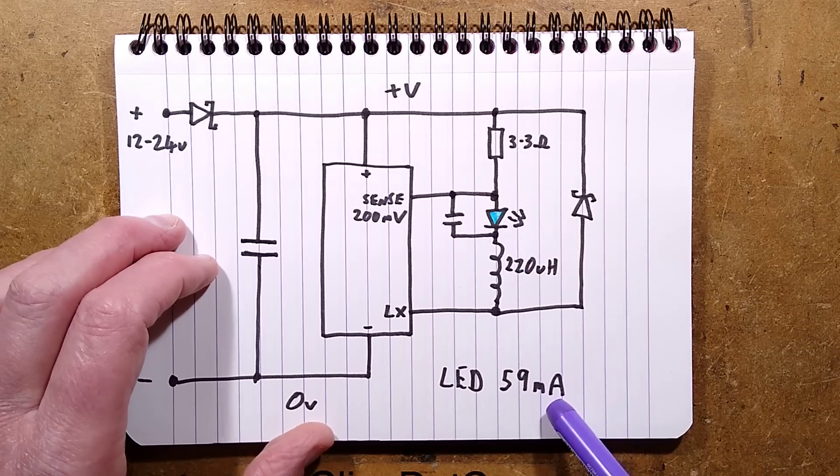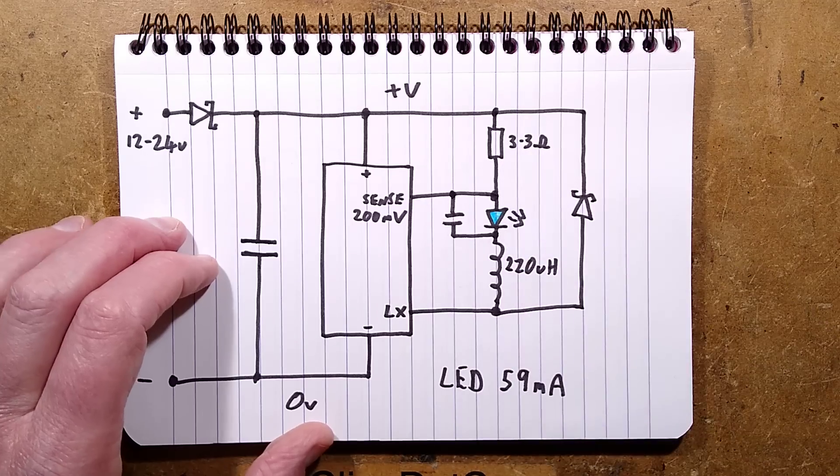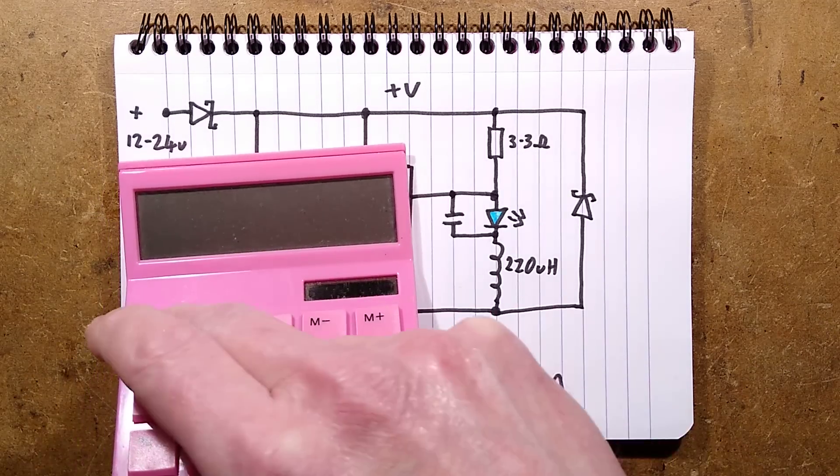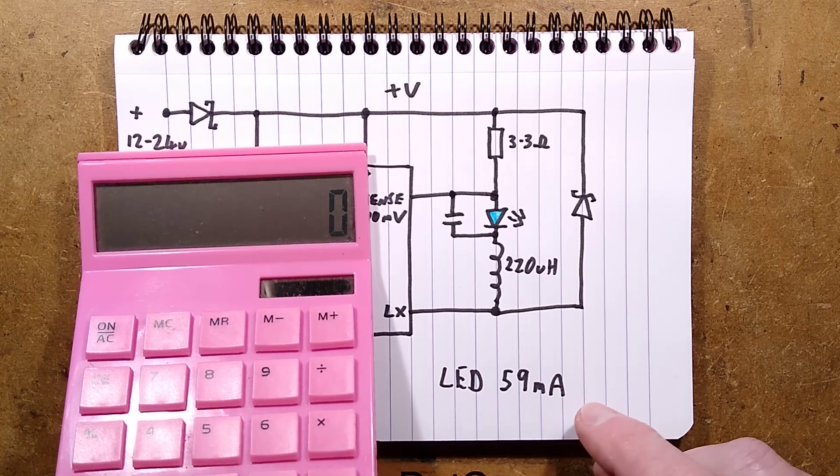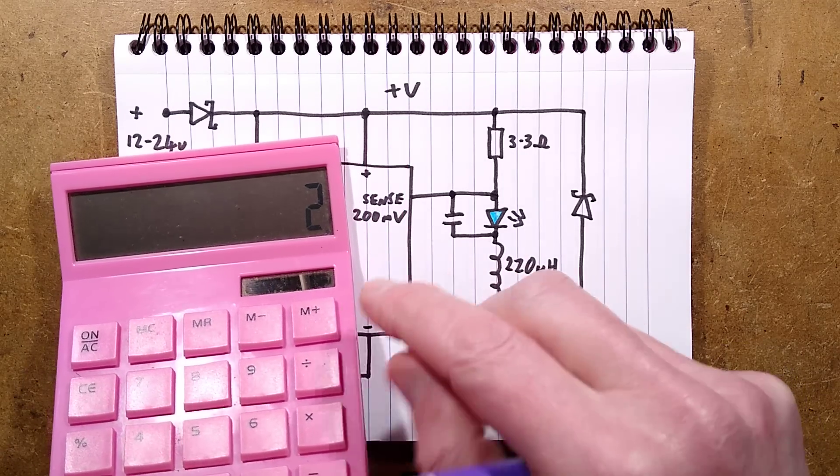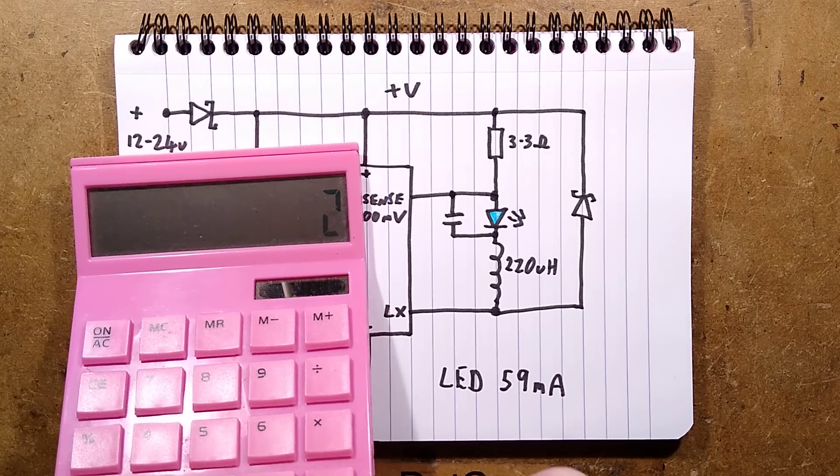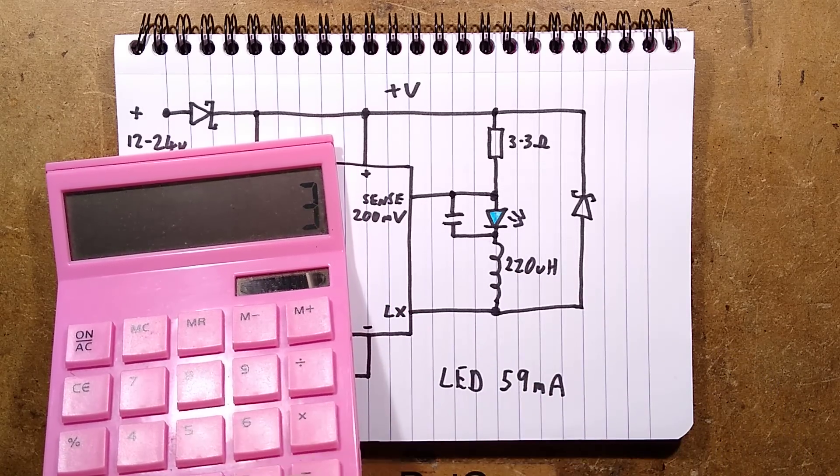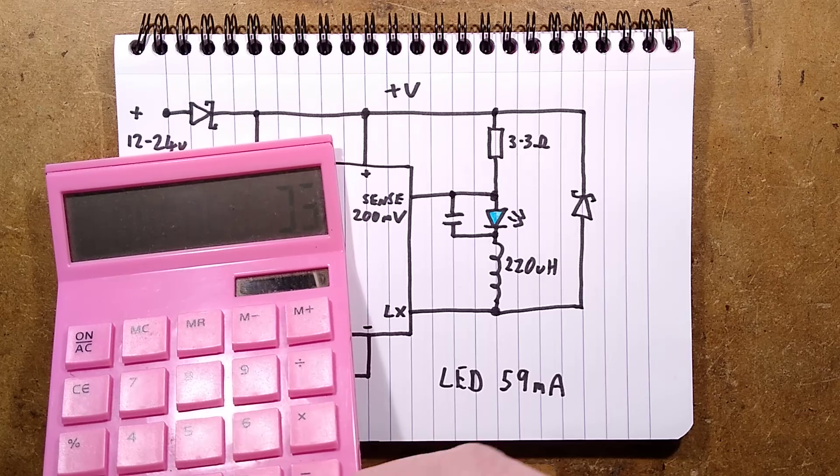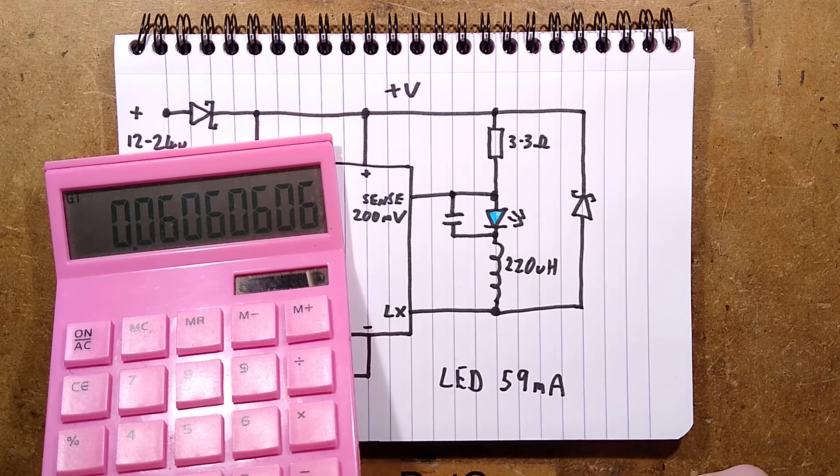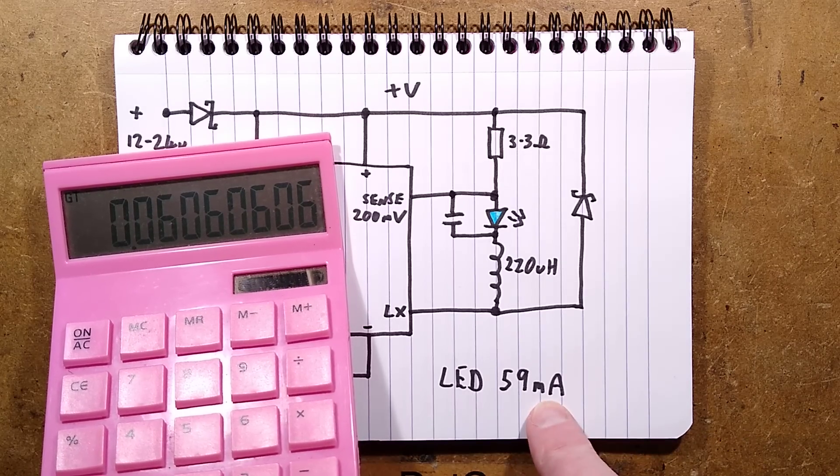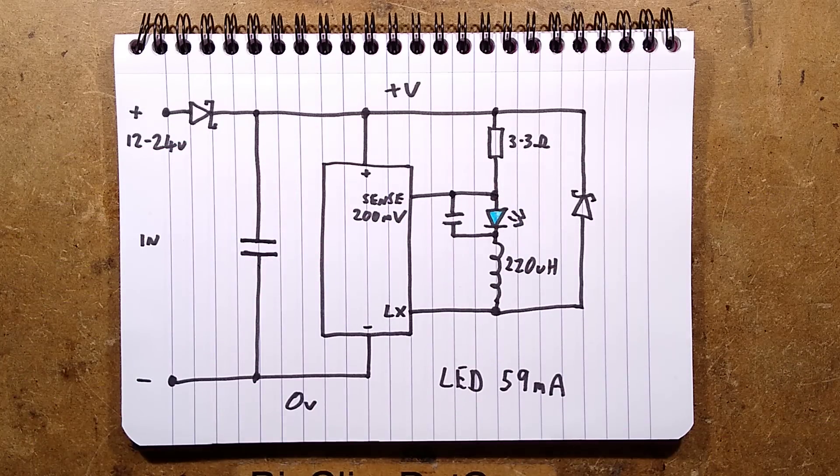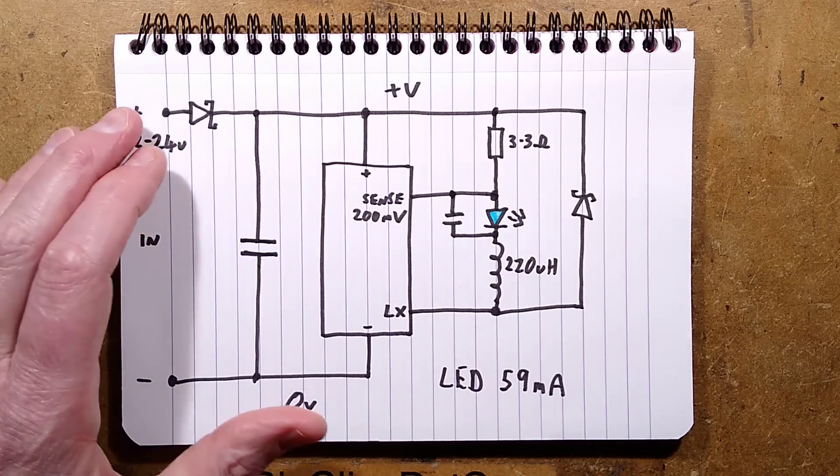I measured 59 milliamps. I wonder what current would actually be. Where's the calculator? I equals V over R. That's 0.2, which is the 200 millivolts, divided by 3.3 equals 60 milliamps. Very close to what I got. That will be the slight tolerance of the resistor probably. So they've just chosen the nearest value of standard resistor to get roughly 60 milliamps through the LEDs.